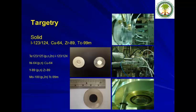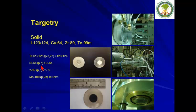We have developed solid targets at our facility for the production of iodine-123, iodine-124, copper-64, zirconium-89, and technetium-99. All these radioisotopes are produced in our facility and used for research purposes.